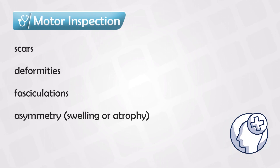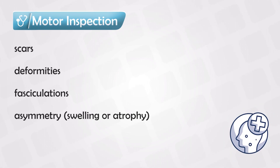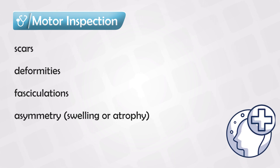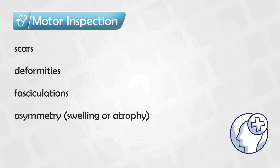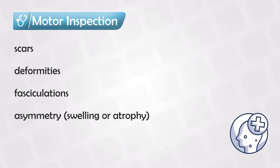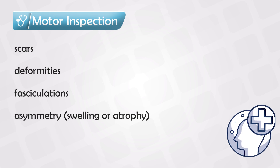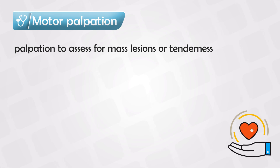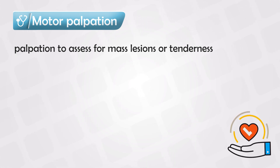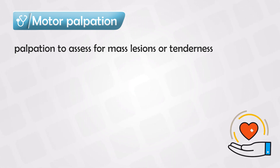While performing the motor examination you can start by inspection. For example, if you're examining the lower limbs for their motor function, you will inspect both lower limbs and look for any scars, any deformities, any asymmetry either because of swelling or atrophy, or any fasciculation which is fine tremors in the muscles. You can continue by palpating the muscles, look for any lesions or masses, and check the muscle bulk and compare it to the other side.